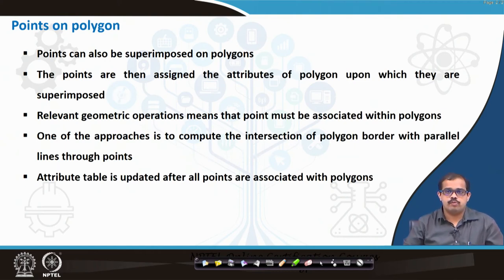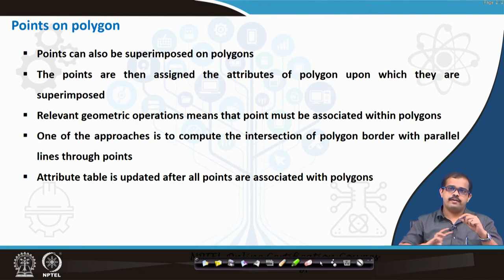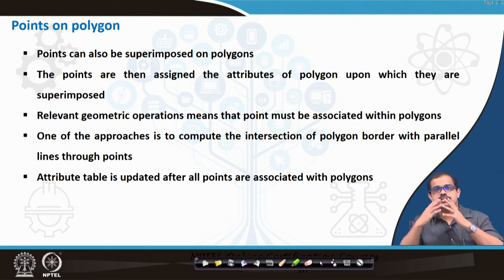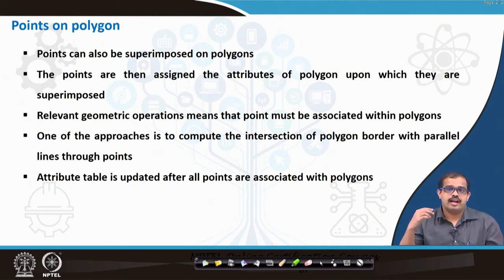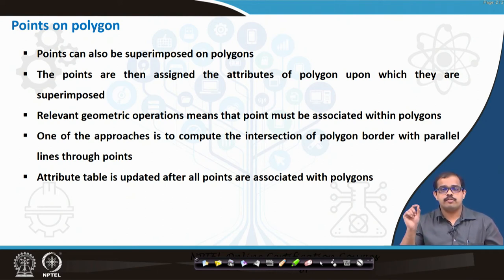The second type of overlay operation is points on polygon. Points can be superimposed on polygons. For example, if you want to find how many trees are in a city, you have the tree layer as points and the city boundary with buildings as polygons. Superimposing the points on the polygons gives you a perspective of how many trees a city has around each building, and whether building bylaws are respecting environmental norms.